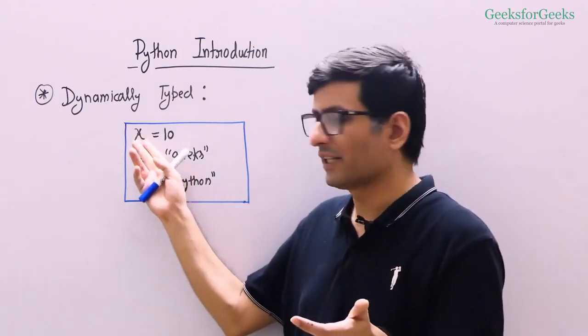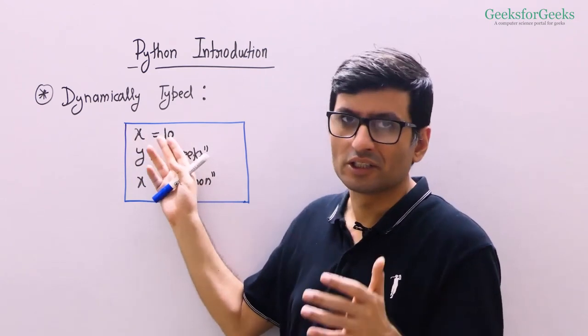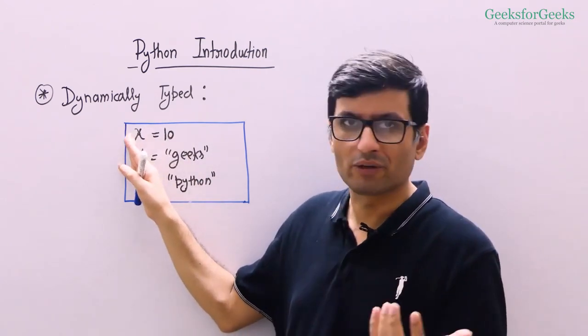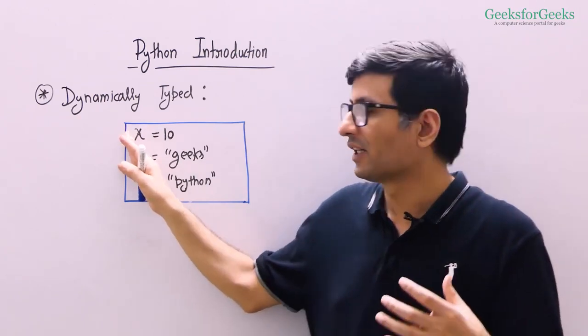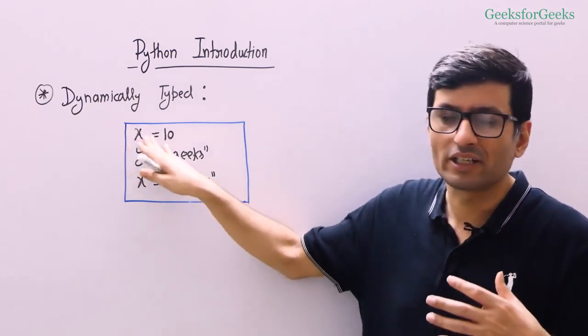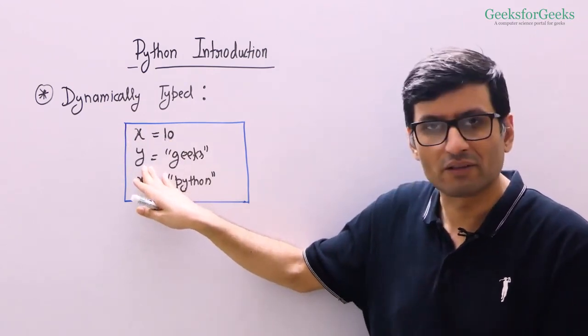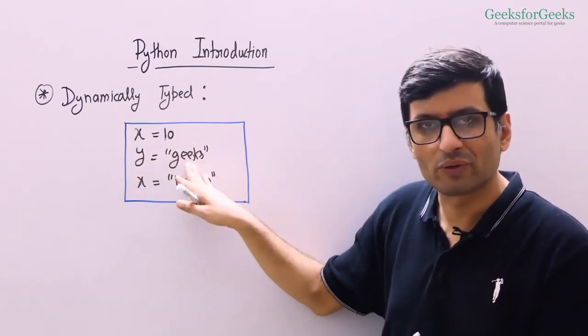For example, here I have a variable x and I am storing an integer. So in Python, I don't have to tell whether this x is going to store an integer value or float value. As a programmer, I can simply write x equal to 10 and here another variable y which holds a string value.